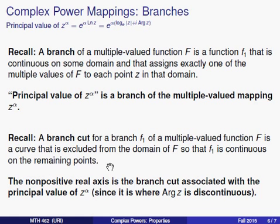Remember that a branch cut is a curve that is excluded from the domain of the function, so that f1 is continuous everywhere else. Now, the principal value is continuous everywhere except where the argument is discontinuous. Remember that the principal value of the argument has a discontinuity along the negative real axis and at the origin. So the non-positive real axis is where z to the alpha will also jump if you're moving around the complex plane. It's discontinuous there. And so it is the branch cut associated with the principal value of z to the alpha. If we were to throw away the non-positive real axis, everywhere else, this function z to the alpha would be continuous.